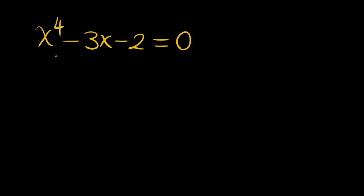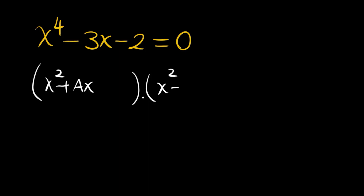We will try to factor this into two quadratics and then solve those quadratics. We write x squared in each factor, with plus ax in one and minus ax in the other. This cancels the x cubed terms. The constants in each factor are B and C, giving us three unknowns to find.